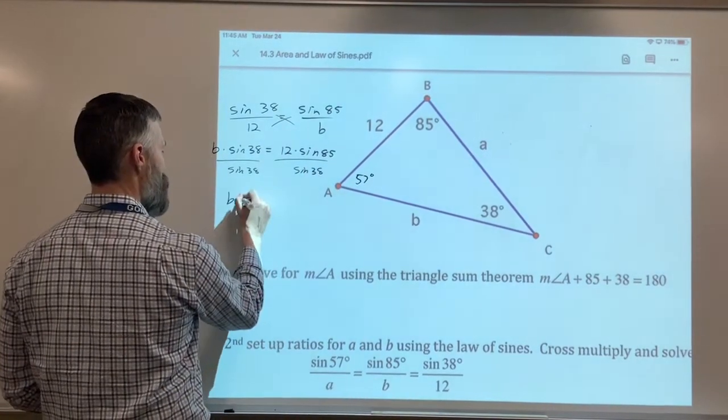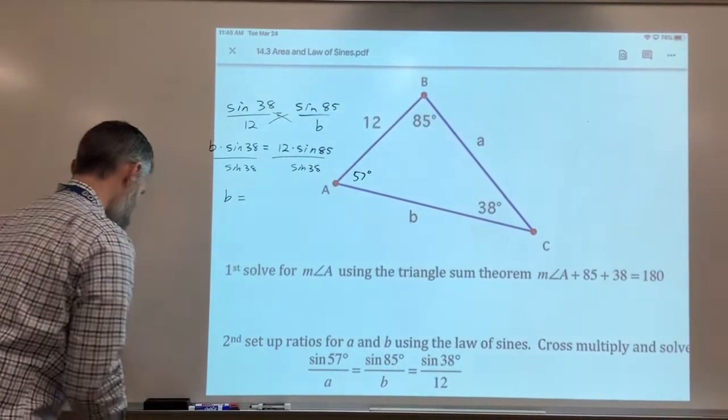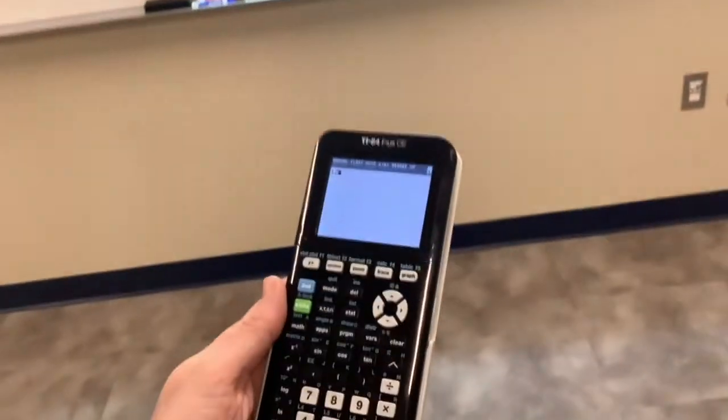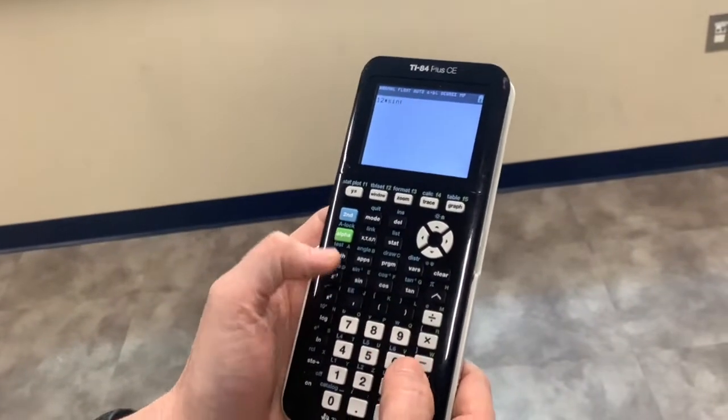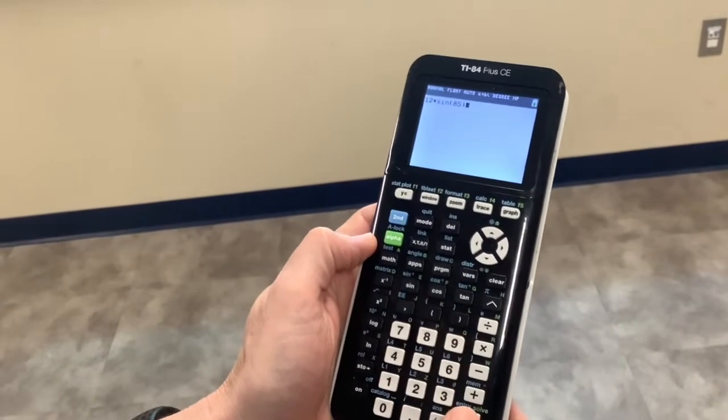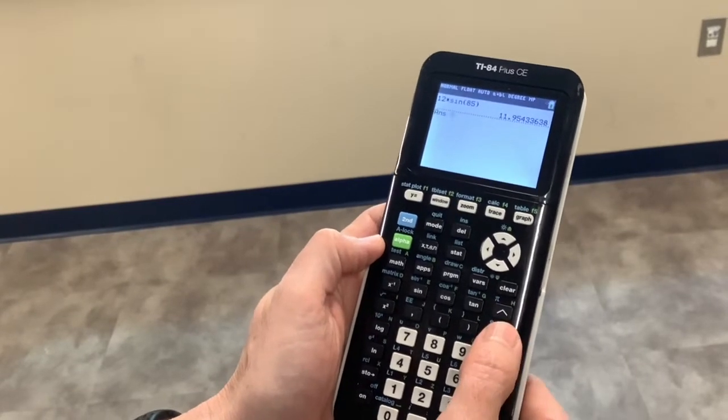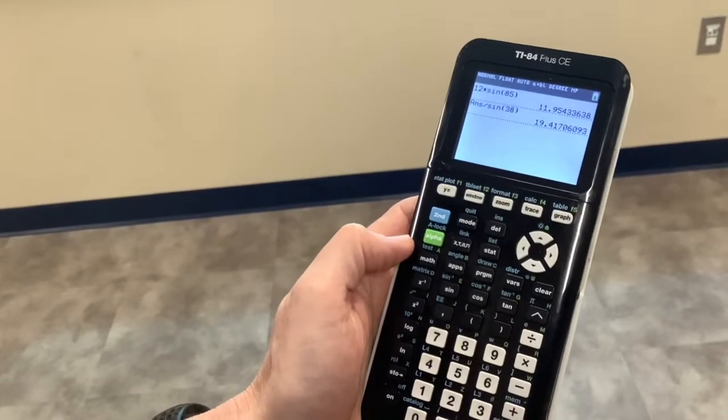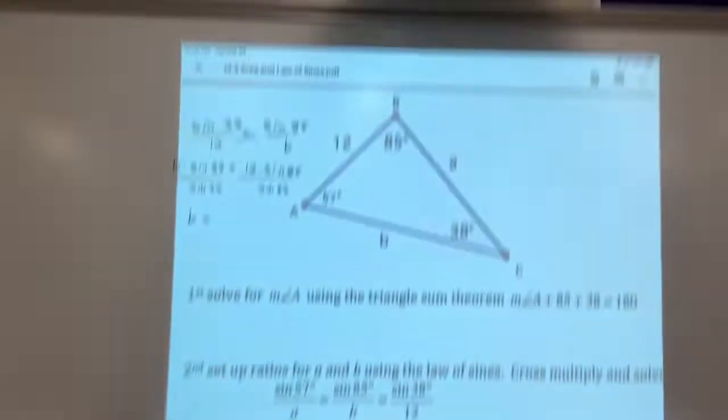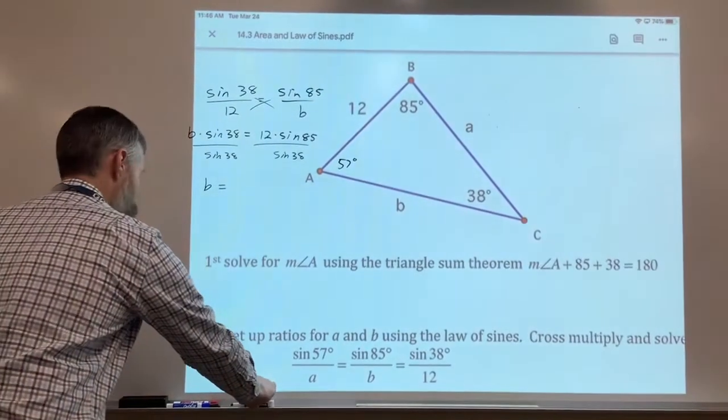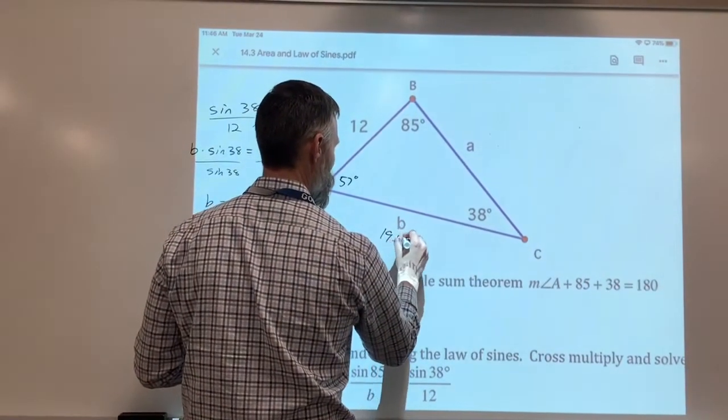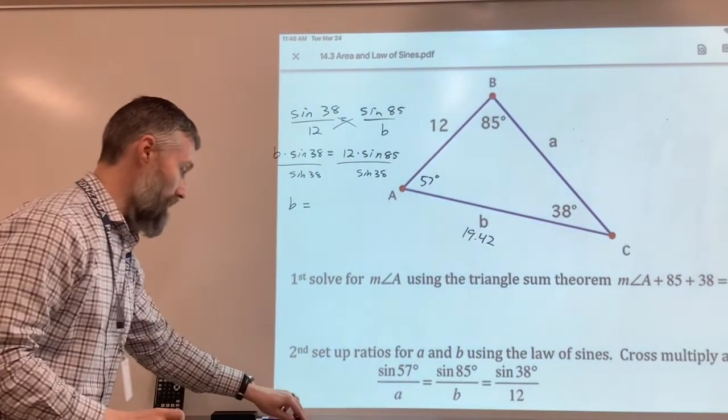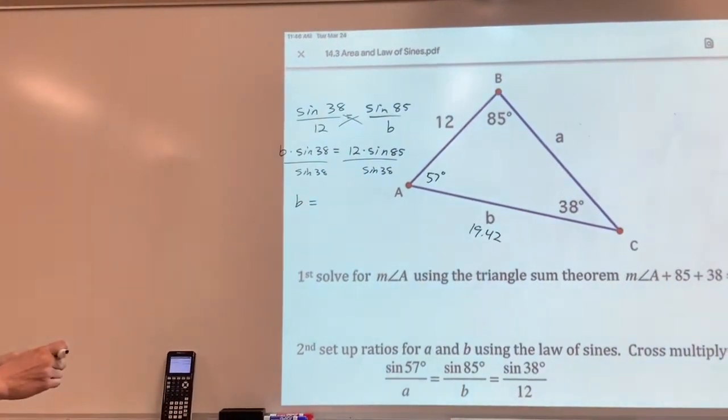And I have B equals, and I just jump into my calculator here. And I'll show you the keystrokes. So I'll just go 12 times the sine of 85, and I'll just hit enter there, and then I'll divide by the sine of 38. And I get 19.42. So side B is 19.42. Now make sure your calculator is in degrees and not radians, or else you won't get that same answer.